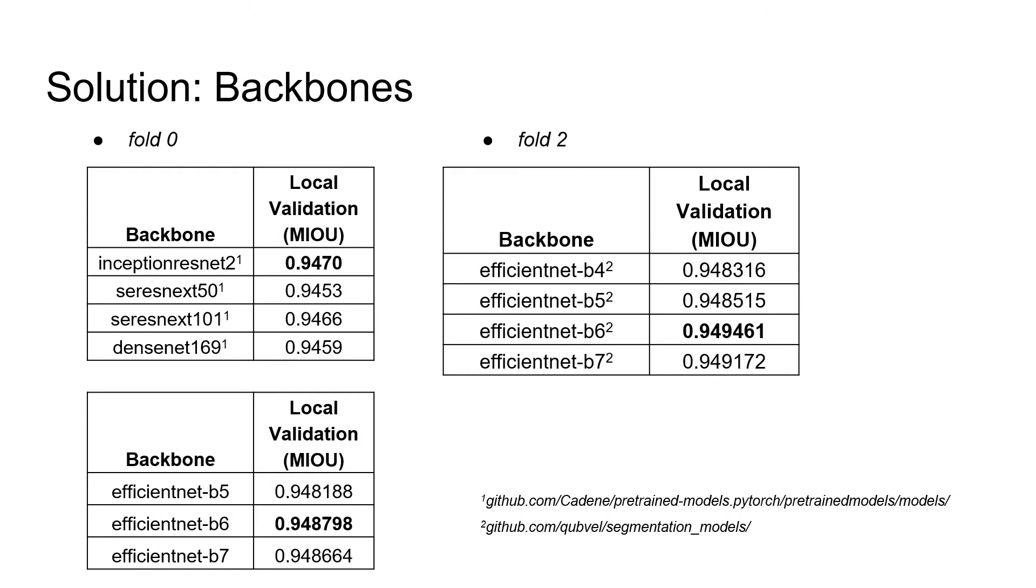After, we started playing around with the different backbones. As you can see from the tables, the EfficientNets family was the highest-scoring backbones. By the way, fold 1 was the worst, so we jumped to fold 2.